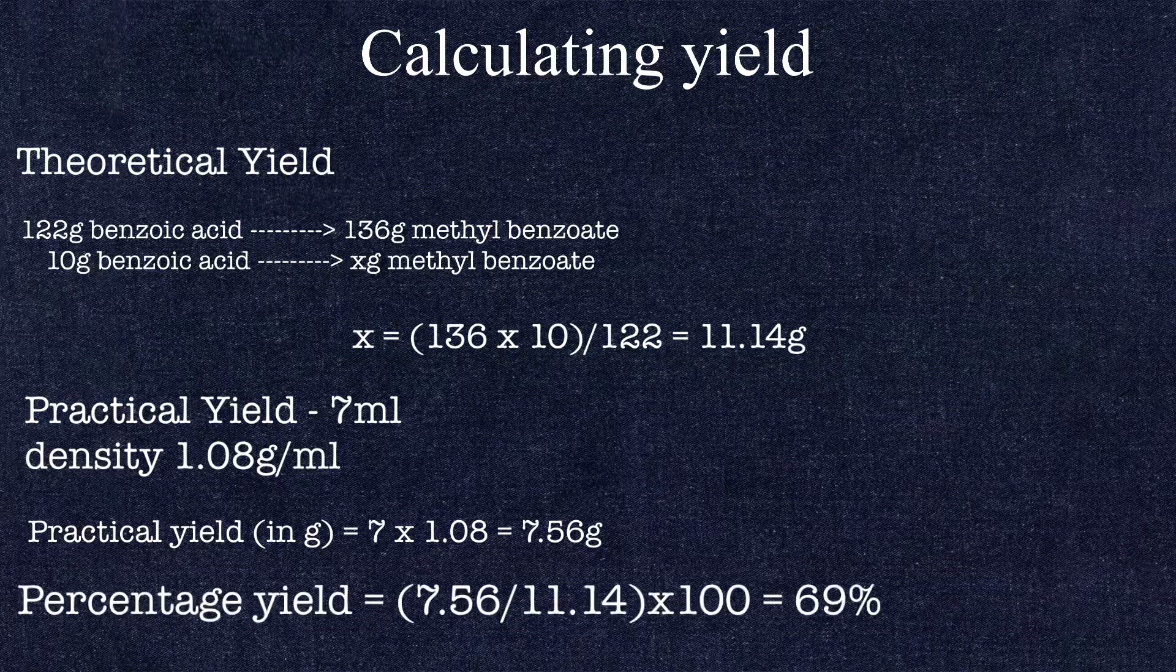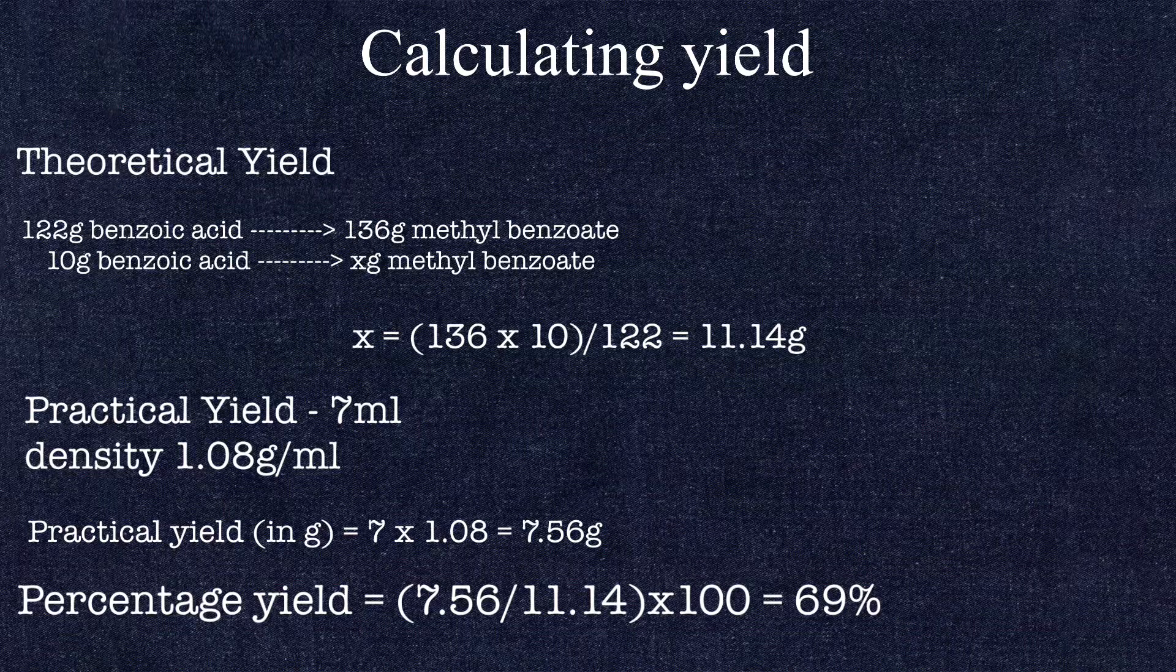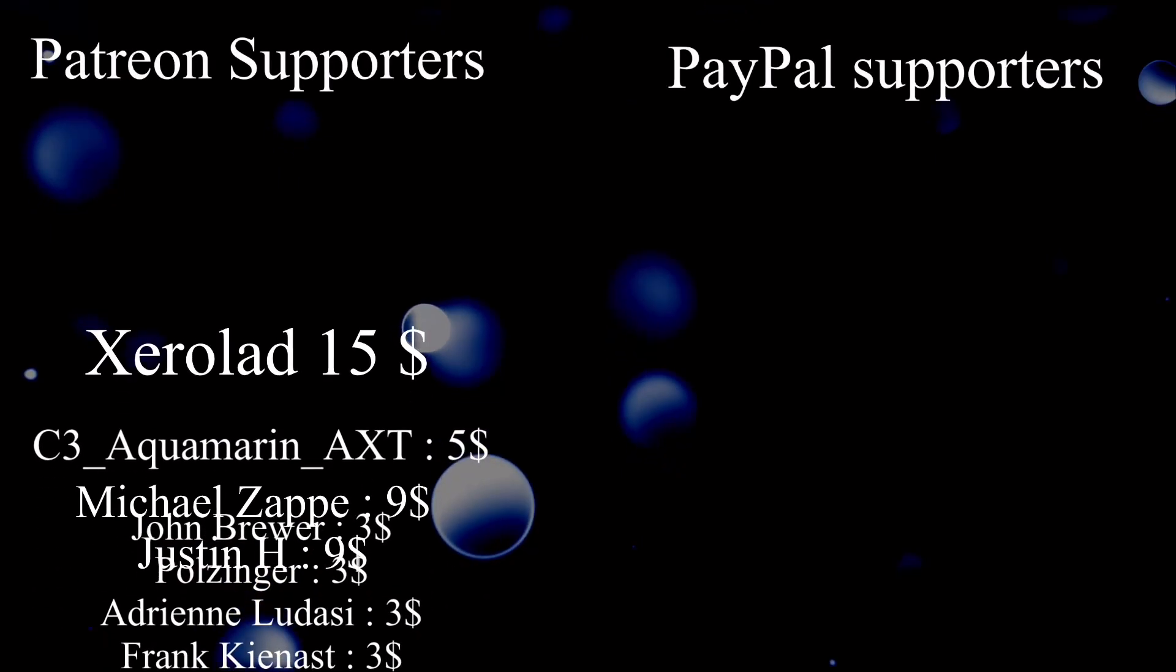So 10 grams of benzoic acid should yield 11.14 grams of methyl benzoate. And the percentage yield is 69%. So that's all in this video.